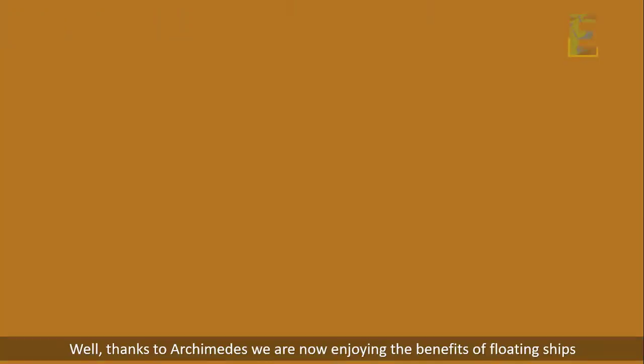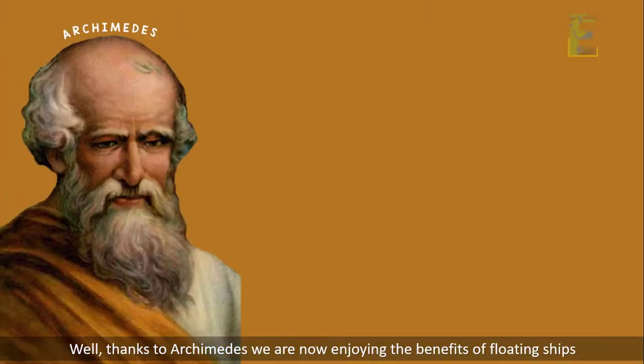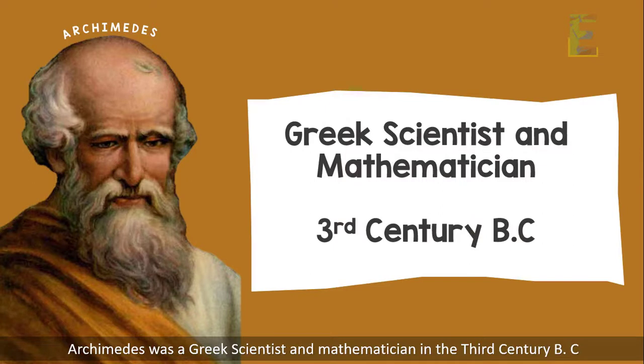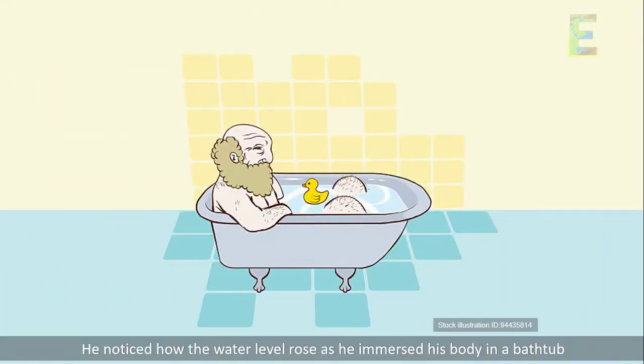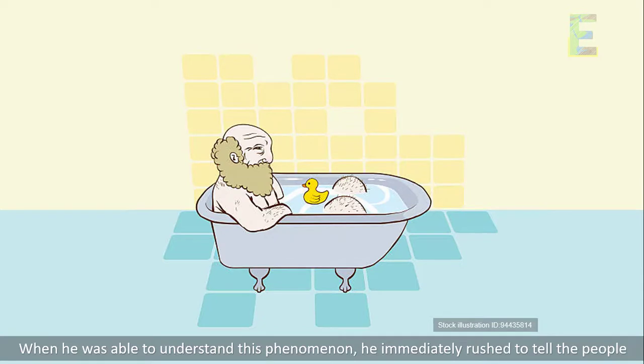Well, thanks to Archimedes, we are now enjoying the benefits of floating ships. Archimedes was a Greek scientist and mathematician in the 3rd century BC. He noticed how the water level rose as he immersed his body in a bathtub. When he was able to understand this phenomenon, he immediately rushed to tell the people.